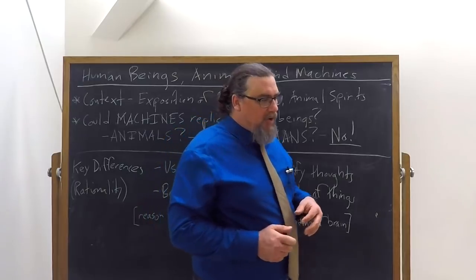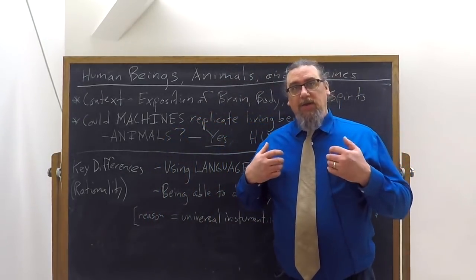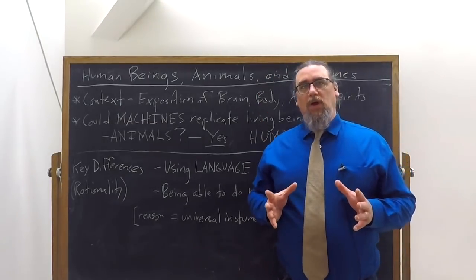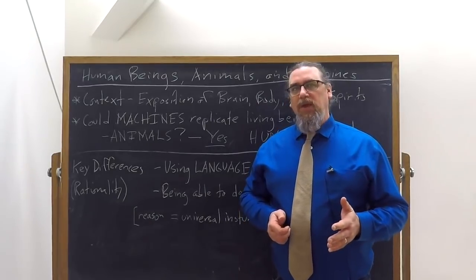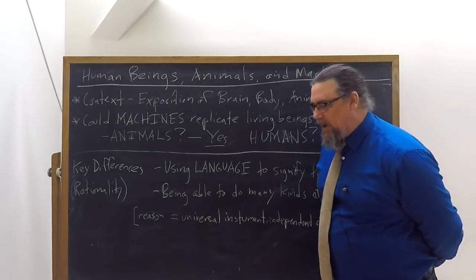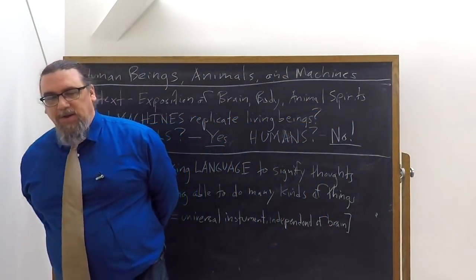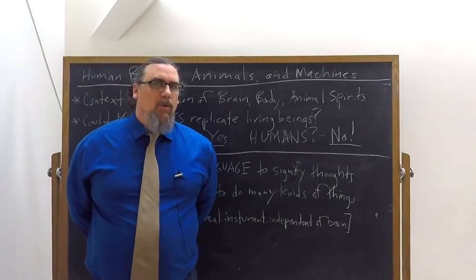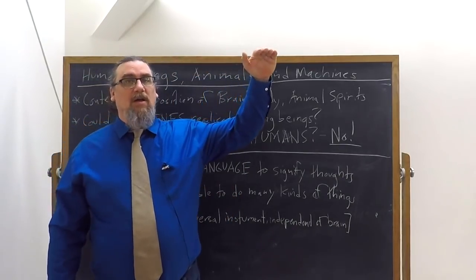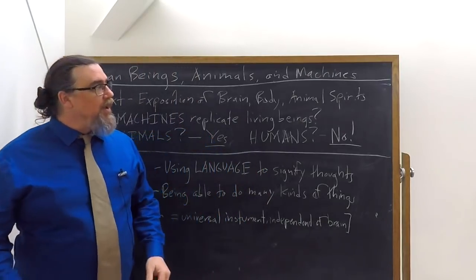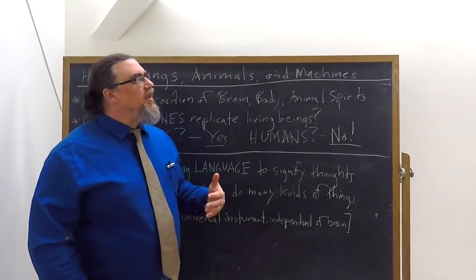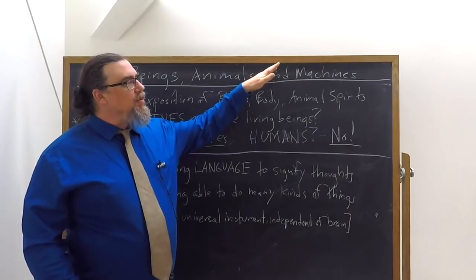A short but very interesting discussion on the part of Descartes takes place in part five of his Discourse on Metaphysics, and it has to do with the relationship between human beings, animals, and machines. And this comes out of a long tradition of saying that human beings are fundamentally different than the other animals in that we possess rationality, and because of possessing rationality, we exist at a higher level than they do.